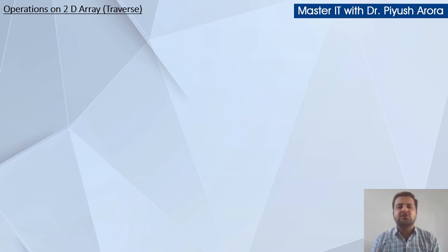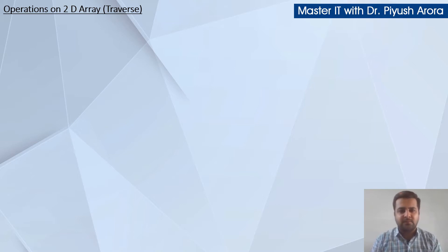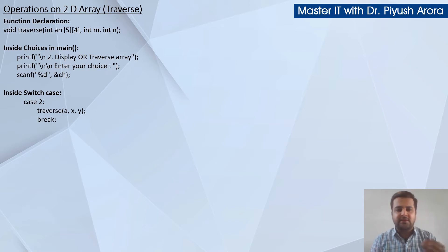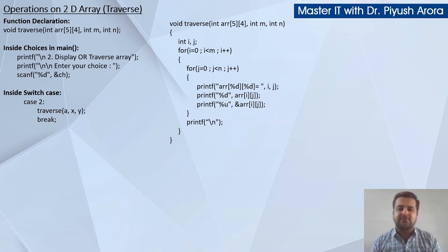Hello everyone, let us understand the traverse operation on a two-dimensional array, which is a very simple and easy operation. If you understand how to create a two-dimensional array, then traverse would not be difficult for you. This is the function declaration part. We can see void traverse function declared. Choice number two is to traverse, and choice number one from the previous video is to create the two-dimensional array matrix.